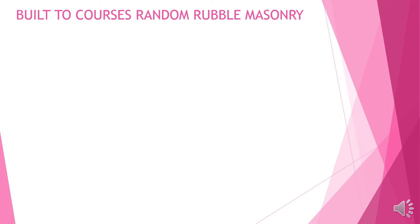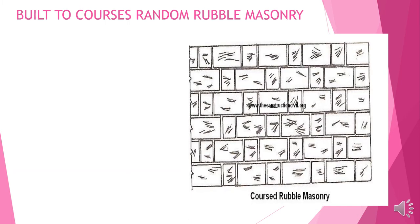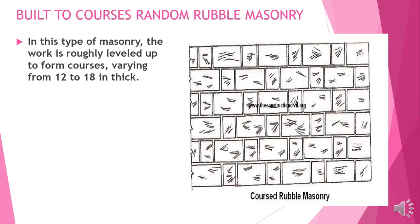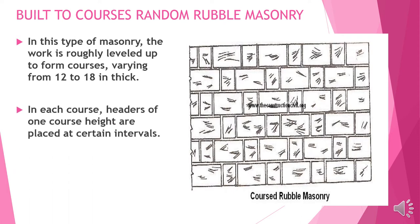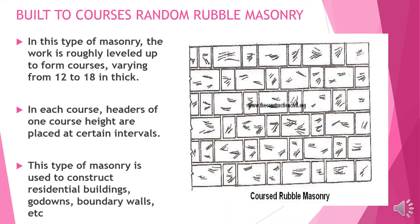Built-courses random rubble masonry: in this type the work is roughly leveled up to form courses varying from 12 to 18 inches in thickness. In each course, headers of one course height are placed at certain intervals. This type of masonry is used to construct residential buildings, godowns, boundary walls, etc.